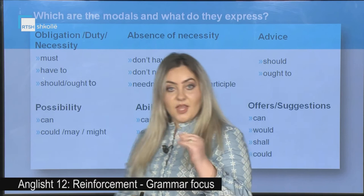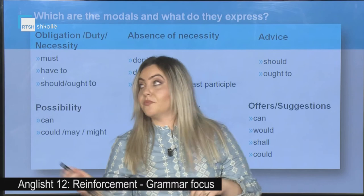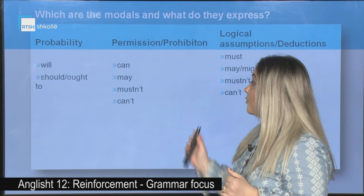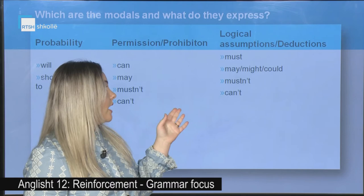We use should or ought to for advice. We use can, would, shall, could for offers or suggestions. Also, we use will, should, or ought to for probability. We use can, may, must, and can't for permission or prohibition. And lastly, we use must, may, might, could, mustn't, or can't for logical assumptions or deductions.